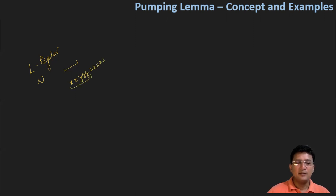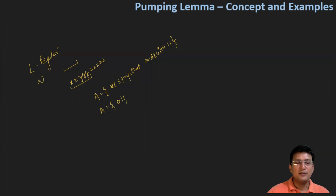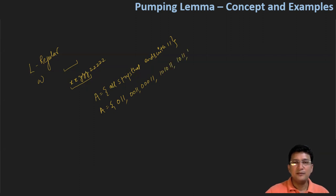Let's take an example. Let's say we have a language A which says all strings that end with '11'. So if I have strings like 011, 0011, 101011, 1011, 10101011, and so on — there can be any number of strings in this language, which means the language is an infinite language.